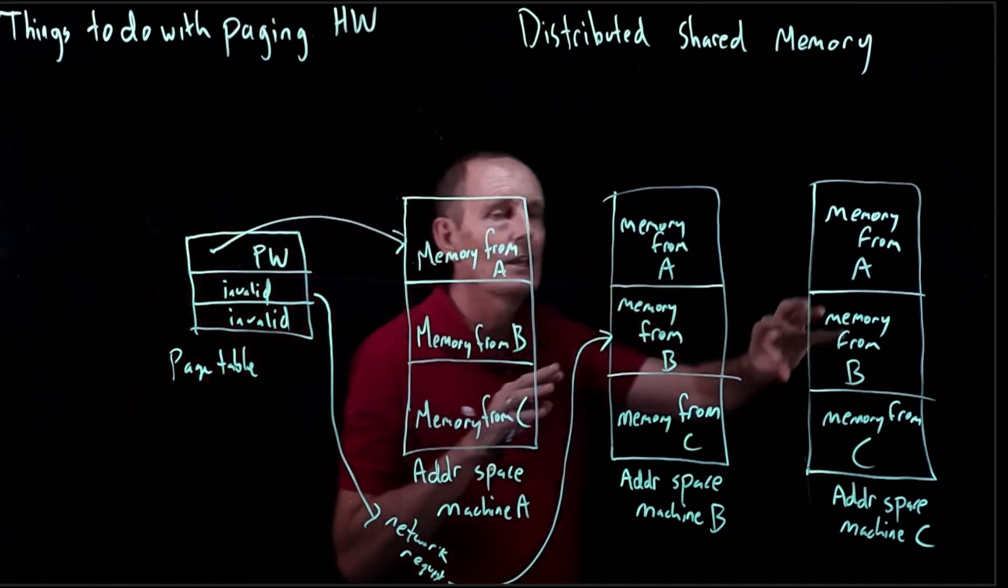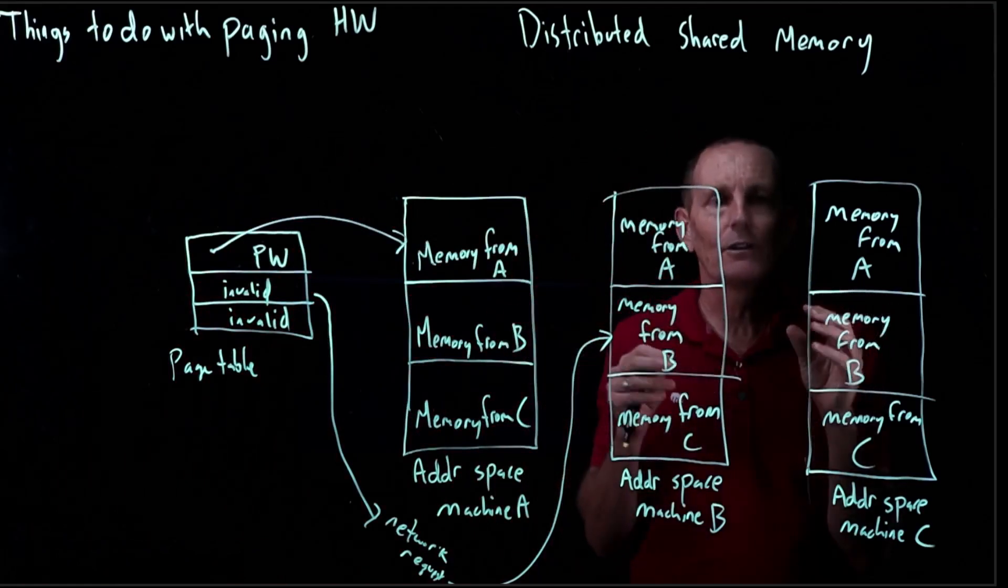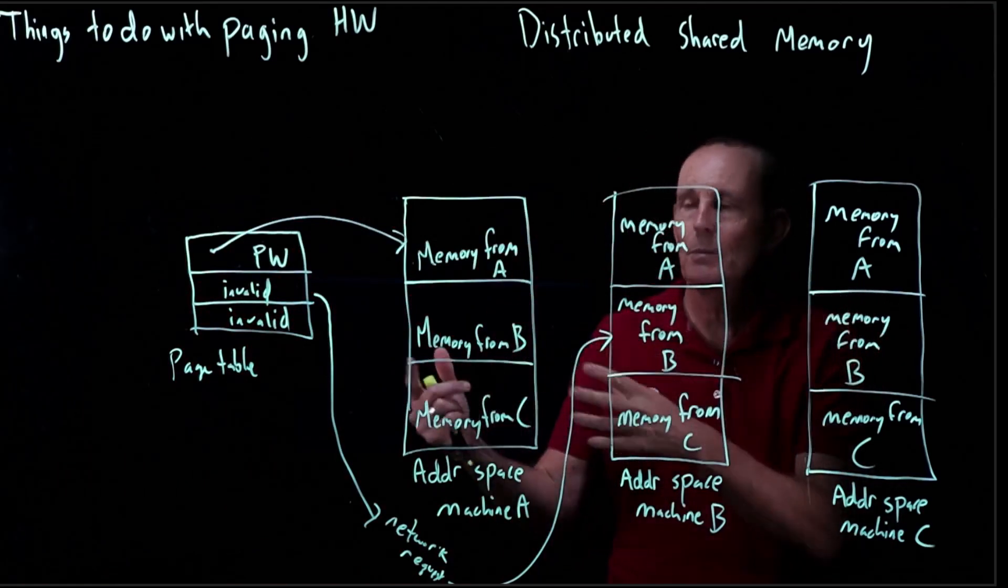And then B and C, if they want to read or write to B, will have to query and figure out who is the current owner and maybe go get that on it.